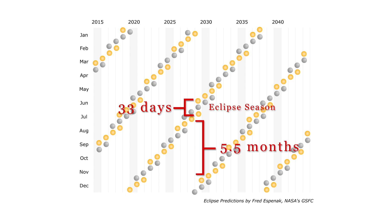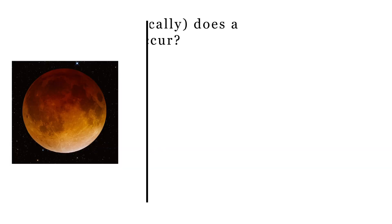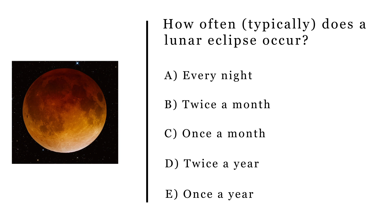There will be one lunar eclipse each eclipse season, very rarely two. So the best answer is that lunar eclipses occur typically twice a year.